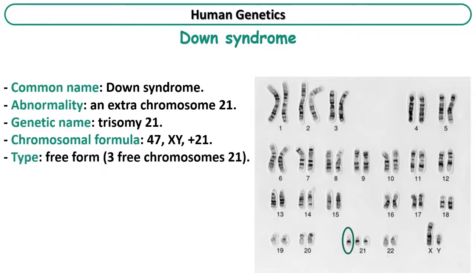This type of trisomy 21 is called free form because the three chromosomes 21 are free and not attached to any other chromosomes. And of course, trisomy 21 is an autosomal abnormality.